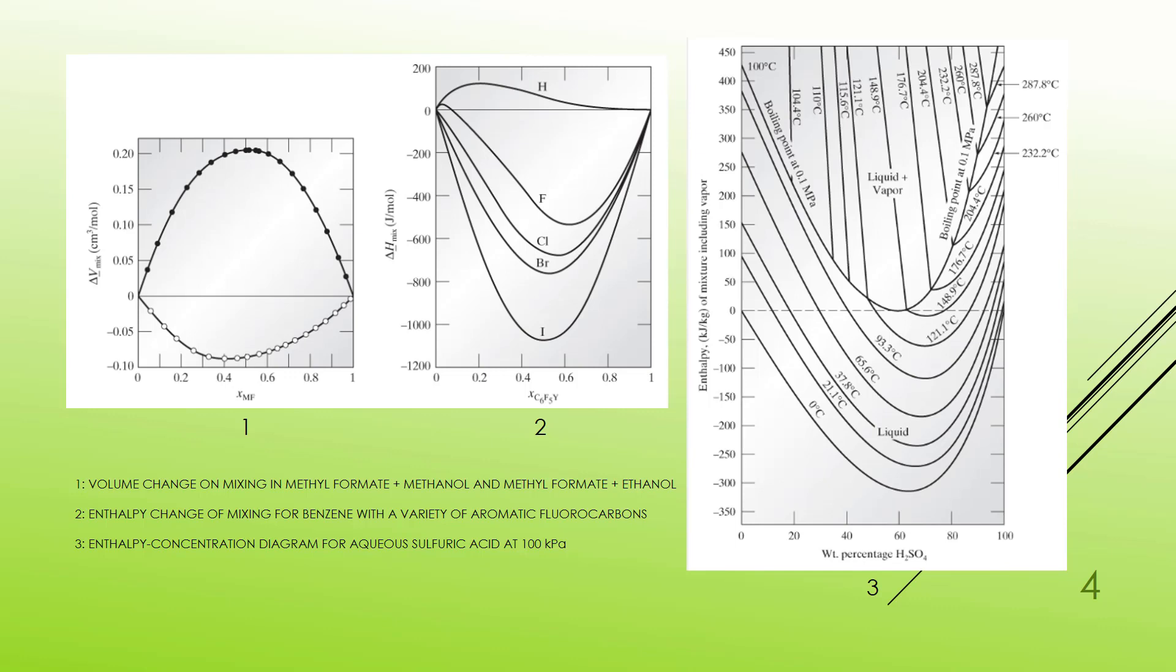If we look at some experimental results that people have gathered over time, we have several of these. Let's start by looking at this diagram three. This is the weight percentage of H2SO4 as a function of enthalpy. And what we see is that the enthalpy changes, not linearly, but rather dramatically, for various isotherms as I change my weight fraction of H2SO4.